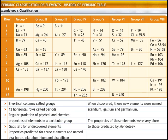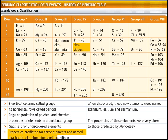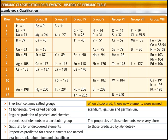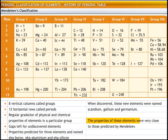Let's look at the features of Mendeleev's periodic table. The table helped predict the properties of three elements, which were named Eka-Boron, Eka-Aluminium and Eka-Silicon. When these elements were discovered, they were named Scandium, Gallium and Germanium. The properties of these elements were very close to those predicted by Mendeleev.